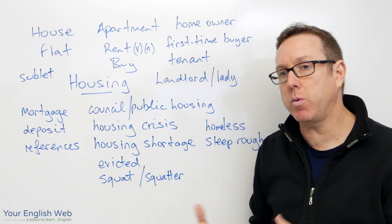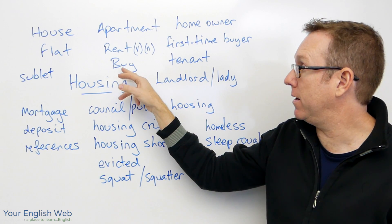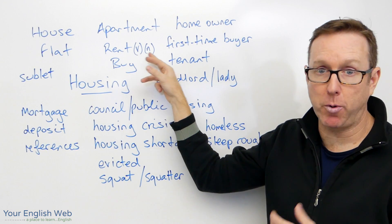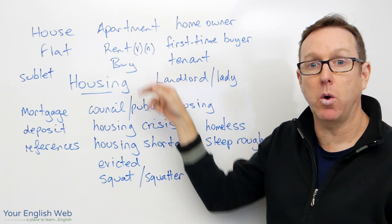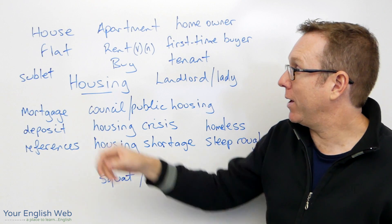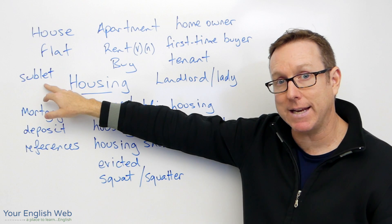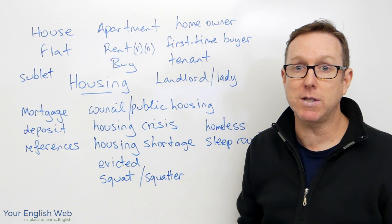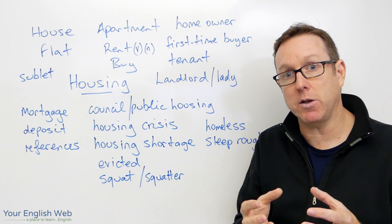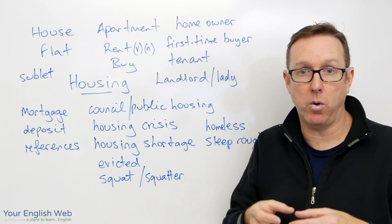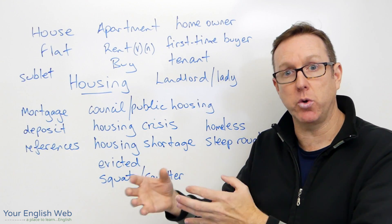We can rent or we can buy. Rent is a verb or a noun: you can rent an apartment, or you can pay rent. We can also sublet. It's common in some cities to sublet an apartment, which means you give the place you are renting to another person — you let that building to another person.